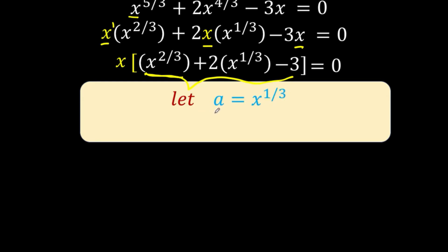In this case, let that variable be equal to a. And it follows that a squared is x raised to 1 third raised to the second, which simplifies as x raised to 2 thirds. Notice that x raised to 1 third is this literal coefficient, and x raised to 2 thirds is this literal coefficient. So this part can now be written in terms of the variable a.